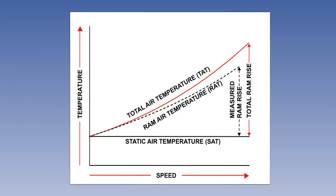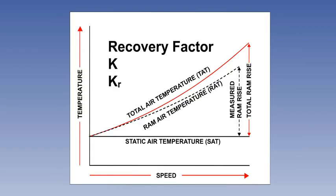The ratio of the measured ram rise to the total ram rise is called the recovery factor. Suppose that, because of losses and inefficiencies in measurement, the measured ram rise is only 90% of the total ram rise. In this case, the recovery factor would be 0.9 or 90%. In formulae, the recovery factor is often written as K or K subscript R.